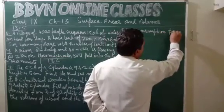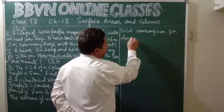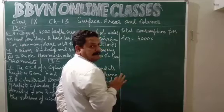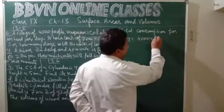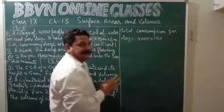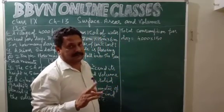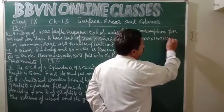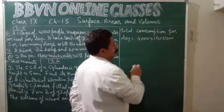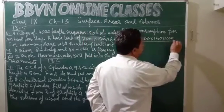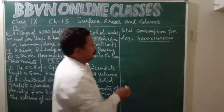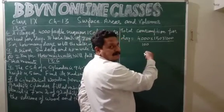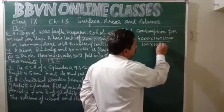Total water consumption per day equals number of persons multiplied by the water required for each person, that is 150 liters. Now, one liter is equal to 1000 centimeter cube, so if I multiply it by 1000 it becomes centimeter cube. I have to convert centimeter cube into meter cube, since 100 centimeters is one meter — so 100 into 100 into 100.